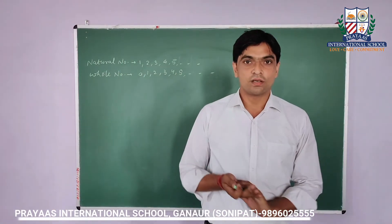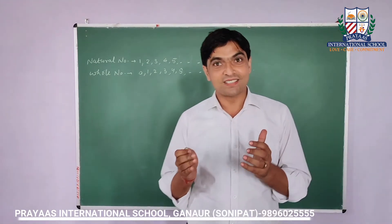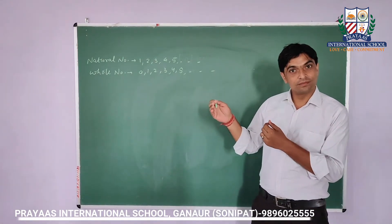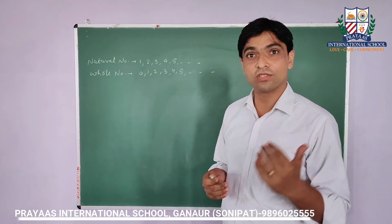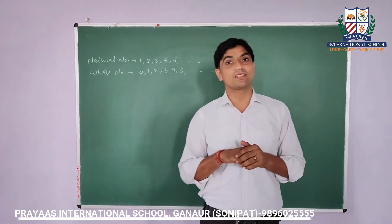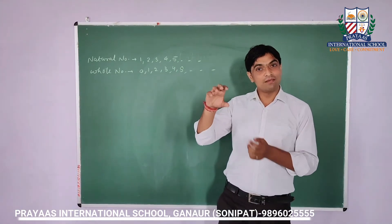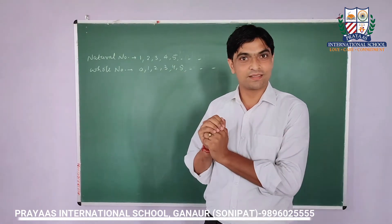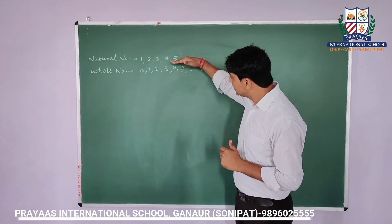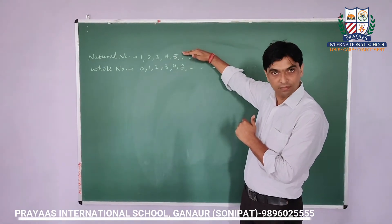Dear students, think you have ten chocolates with you. Suddenly your brother asks you to give two chocolates to him. Then how many chocolates are with you? The answer will be eight. How? From these ten chocolates you have subtracted two chocolates, that's why you are having eight chocolates right now.